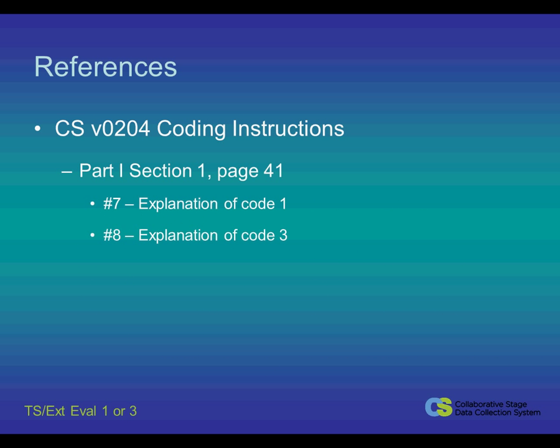The references for this can be found in the CS version 0204 coding instructions, Part 1, Section 1, page 41. Number 7 specifically explains eval code 1 and number 8 specifically explains the use of eval code 3.